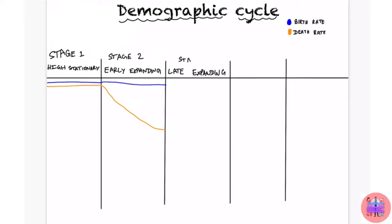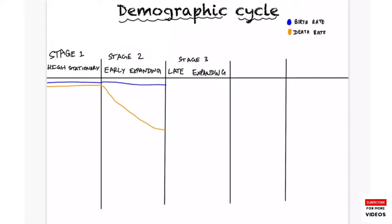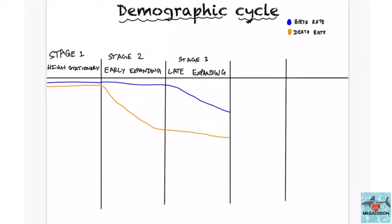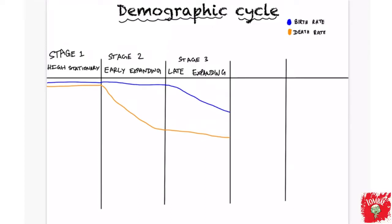Stage three is the late expanding phase. Here, the country starts to adopt contraceptive measures, which helps achieve lower birth rates compared to previously. The death rate was already low and continues to decrease further. The most significant change here is the declining birth rate. The population is still slightly expanding since the death rate is decreasing, but the birth rate has also started to decrease.